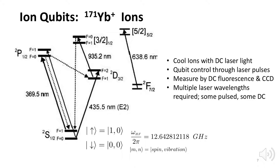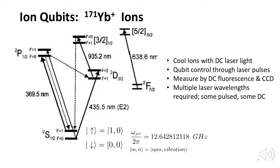Laser pulses around 350 nanometers, higher energy than the SP transition, are used for single-qubit gates, and two-qubit gates are effected by co-propagating laser pulses striking two ions, causing them to vibrate, then making a transition absorbing the vibration and changing their joint state to cause entanglement. This is called a Mølmer–Sørensen gate. Finally, the ions are measured by exciting the SP transition with DC laser light. Those ions in the one state fluoresce and are detected by a camera; those in the zero state are dark.